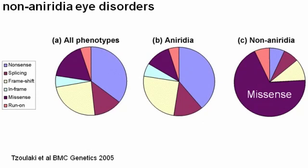Missense mutations are mutations that change the coding sequence from one amino acid to another, but they don't necessarily stop the protein from being functional. It turns out — and I need to present them because we do find them — PAC6 missense mutations are associated with non-aniridic phenotypes.